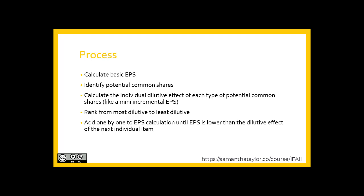You then rank them from most dilutive — the worst ones — to least dilutive. You add them one by one to the overall EPS calculation until adding the next item would no longer lower EPS below the current diluted figure.